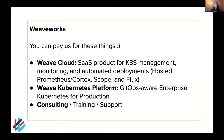We're also a company and we need to make money, so we have products. One is WeaveCloud, which is a SaaS product that helps you manage your Kubernetes clusters, get monitoring, and do automated deployments. We're also developing a Kubernetes platform. We have four years of running Kubernetes in production because we've been running WeaveCloud on Kubernetes on AWS, and we're productizing that as a GitOps-aware enterprise Kubernetes platform.